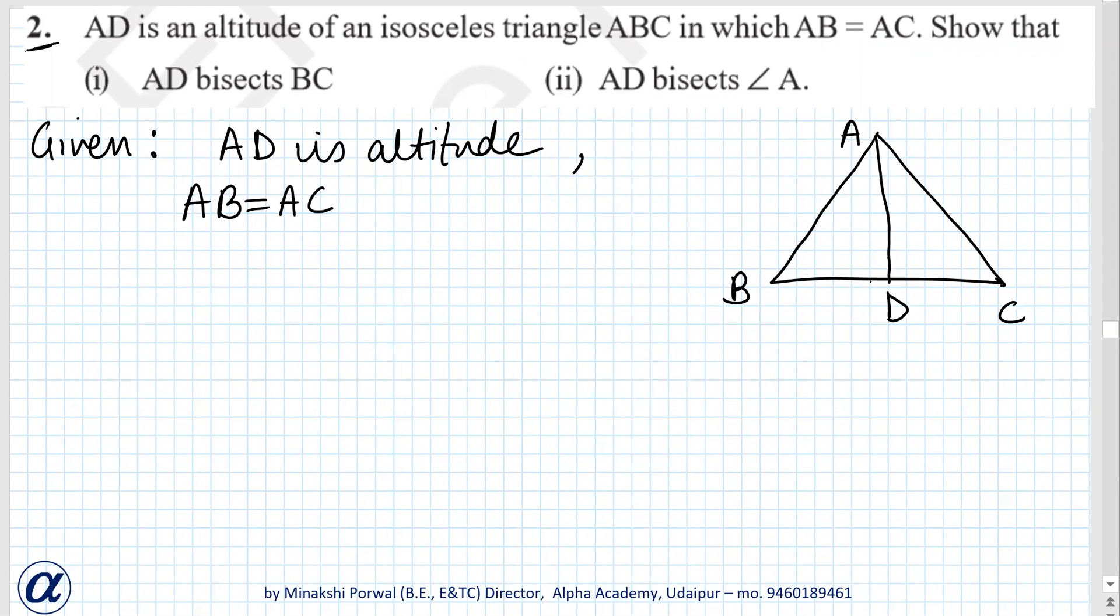AD is altitude means this angle is 90 degrees and this angle is 90 degrees. So angle ADB equals angle ADC equals 90 degrees.